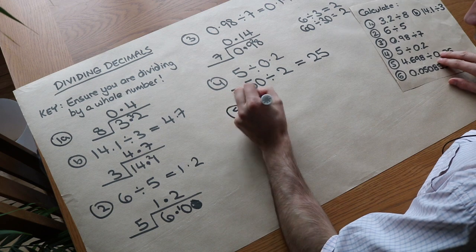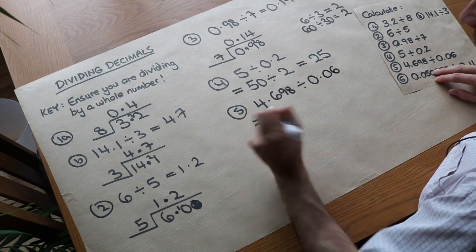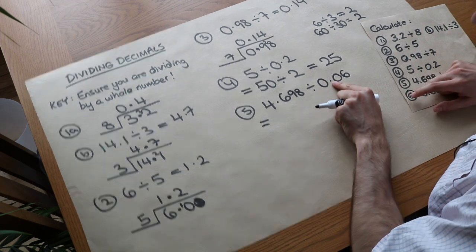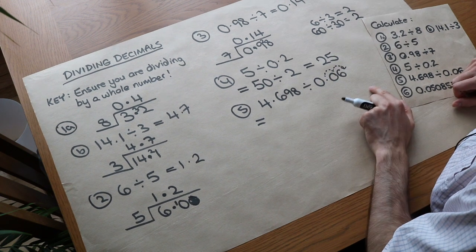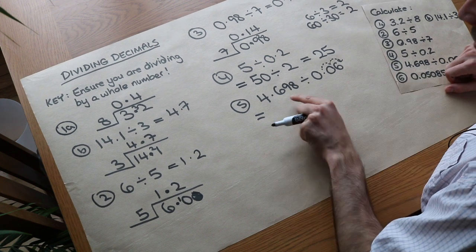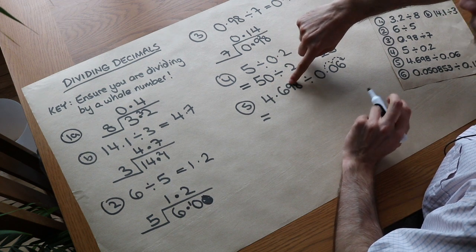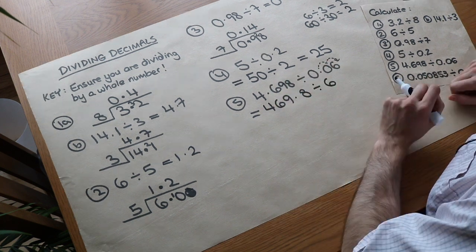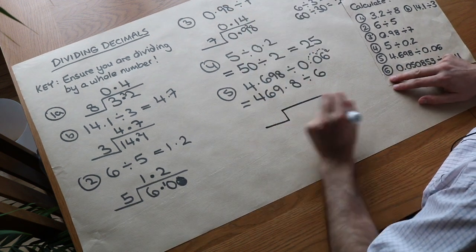Right, question 5. We've got 4.698 divided by 0.06. Now we need to make sure the thing we're dividing by is a whole number. So this is not a whole number. So what do we need to multiply by? Well we want to get 6, don't we? So we need to multiply this by 100, because multiplying by 100 will move the decimal point 2 times to get 6. So let's multiply both of these by 100. Multiply this by 100, it moves the decimal point twice: 1, 2. We get 469.8. And now we're dividing by 6, because 0.06 times 100 is 6. And now we can use exactly the same method as before because we're now dividing by a whole number.